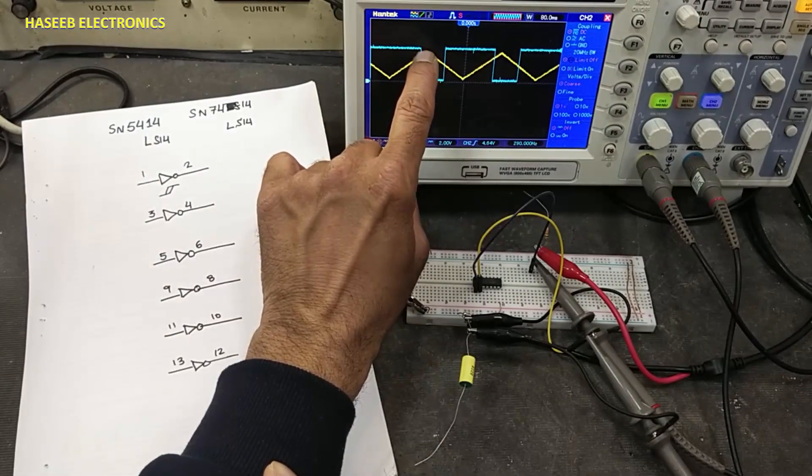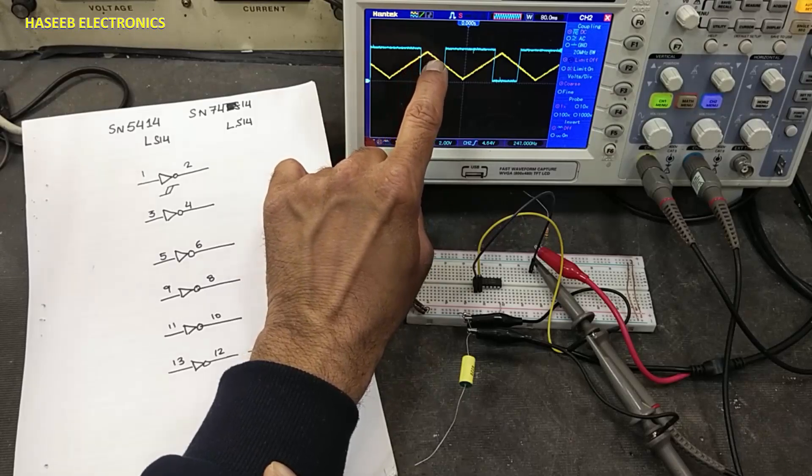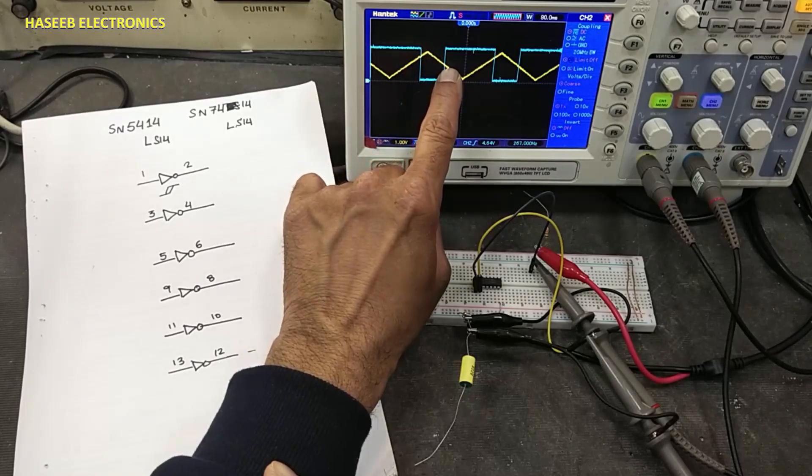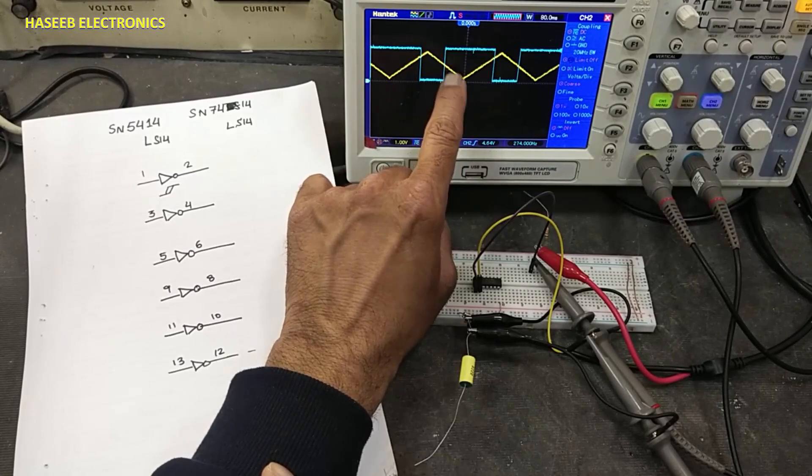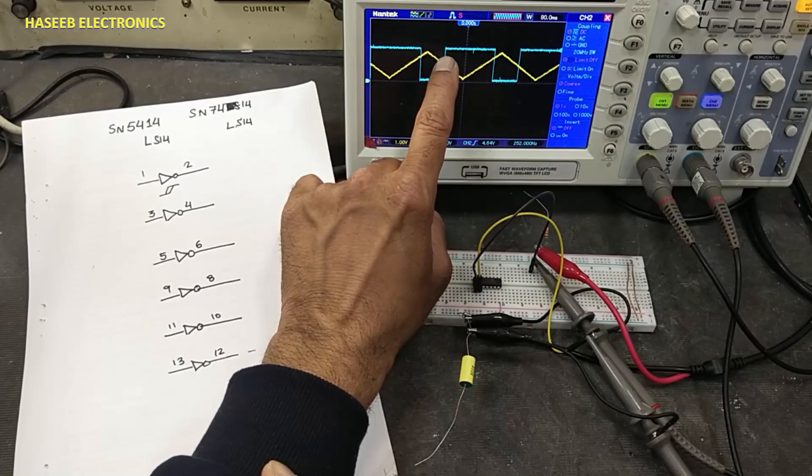When the input voltage level threshold drops below 1 volt, this IC will provide high output.